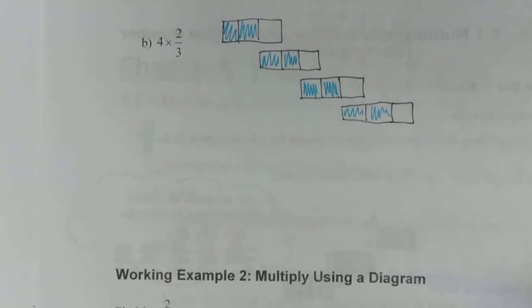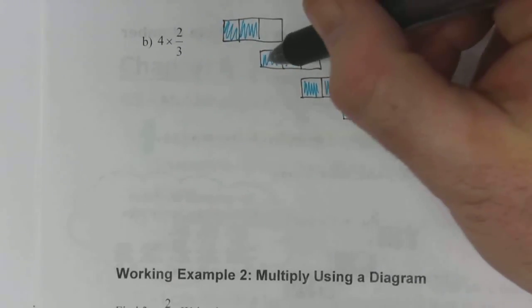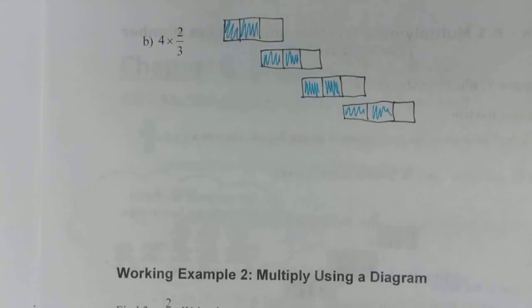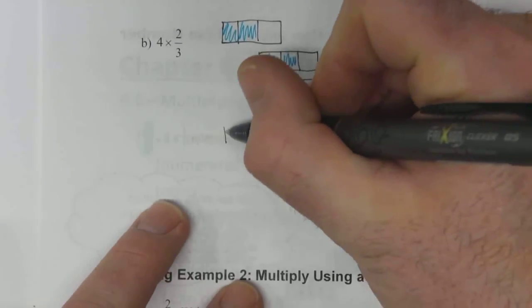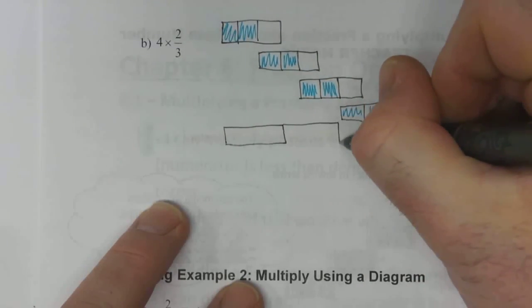So that's four blocks that are 2/3 shaded, lined up so that the shaded parts flow one into another.